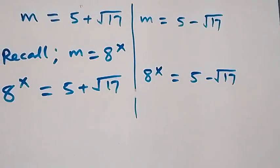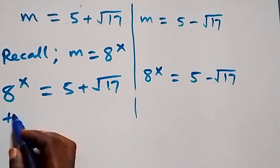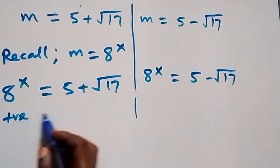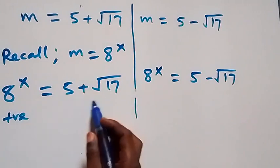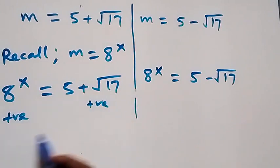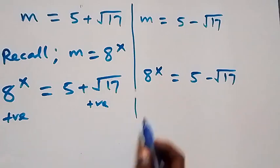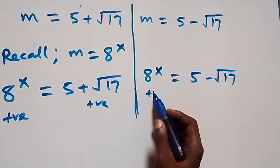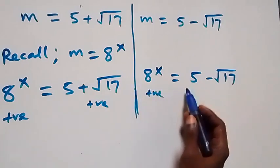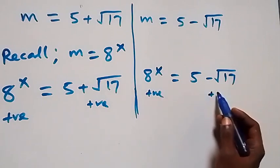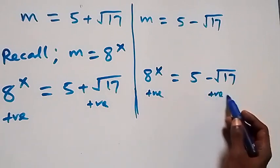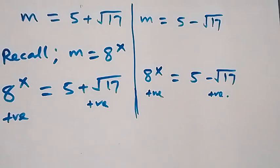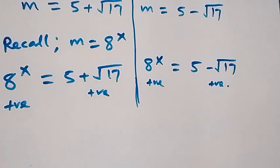When we look at what we have on this side, 5 plus root 17 is a positive number. And 5 minus root 17 is also a positive number. So there will be a real solution on both sides.